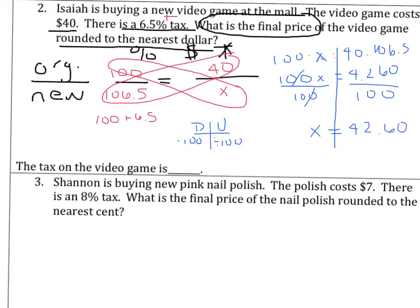The final price of the video game is $42.60. Just so we get the practice in, let's figure out what the tax would be. We take the new price, $42.60, and subtract the old price, $40. So our tax is $2.60.